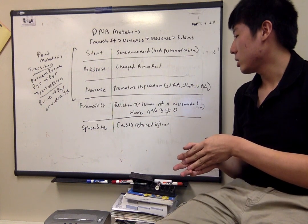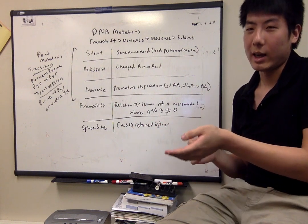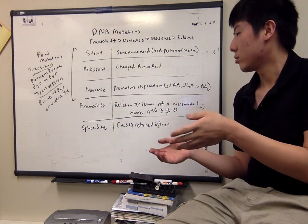If you have a mutation in one of these sites, then you might have a retained intron, and that can severely alter protein function.